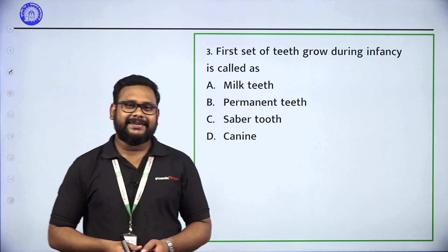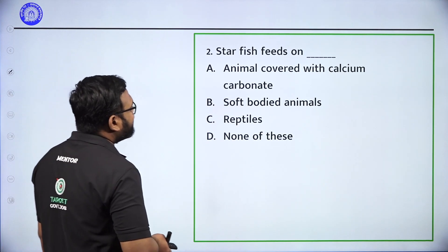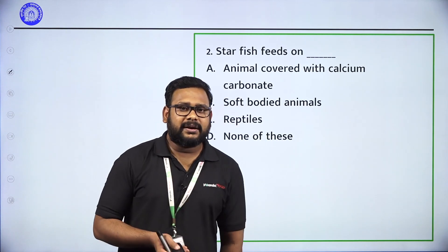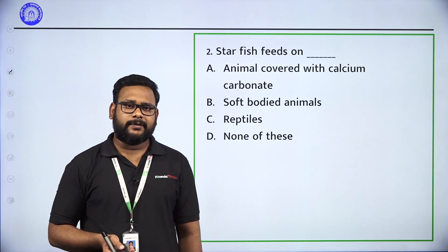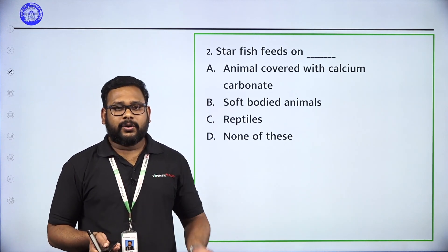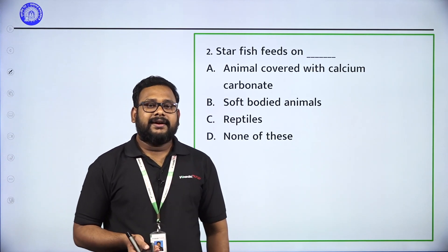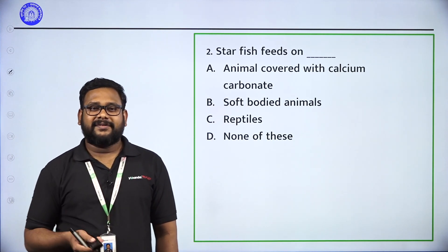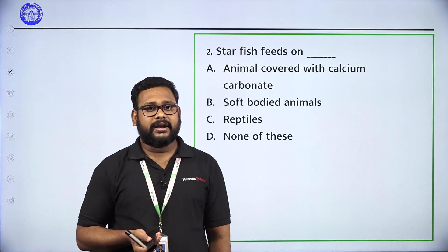Next question: Starfish feeds on — options: animals covered with calcium carbonate, soft-bodied animals, reptiles, none of the above. In the book there are fun facts — special facts given to you. Starfish feeds on animals covered with a calcium carbonate shell. Option A: animals covered with calcium carbonate — that is the answer.